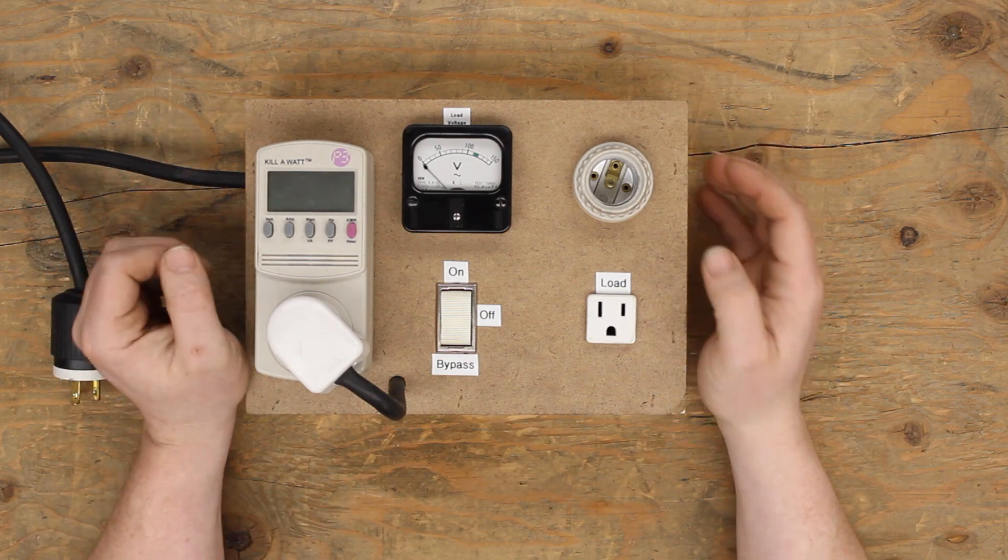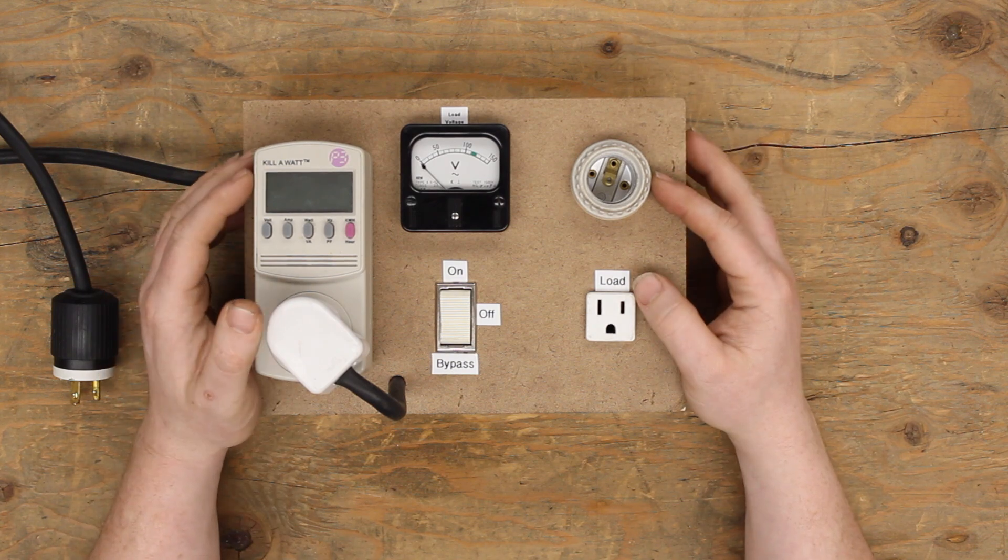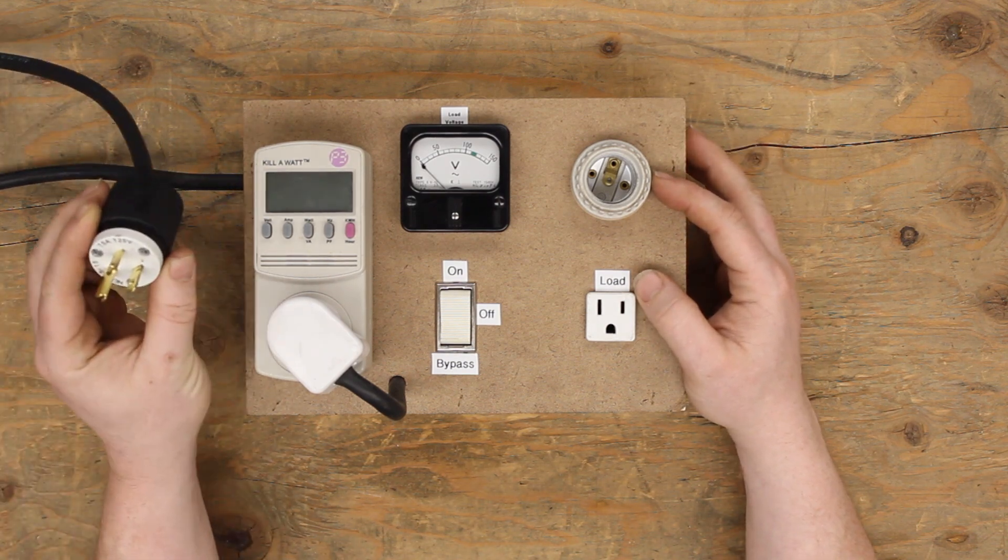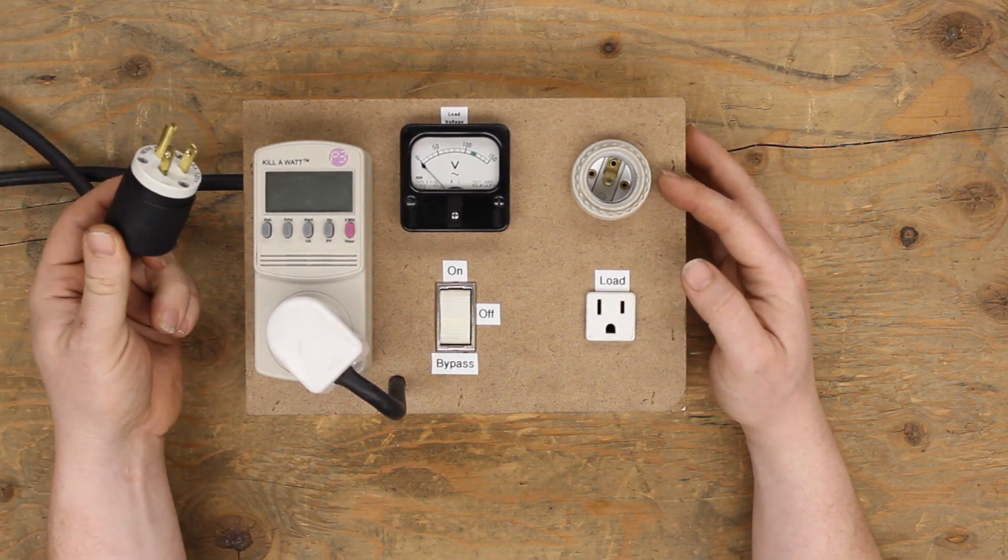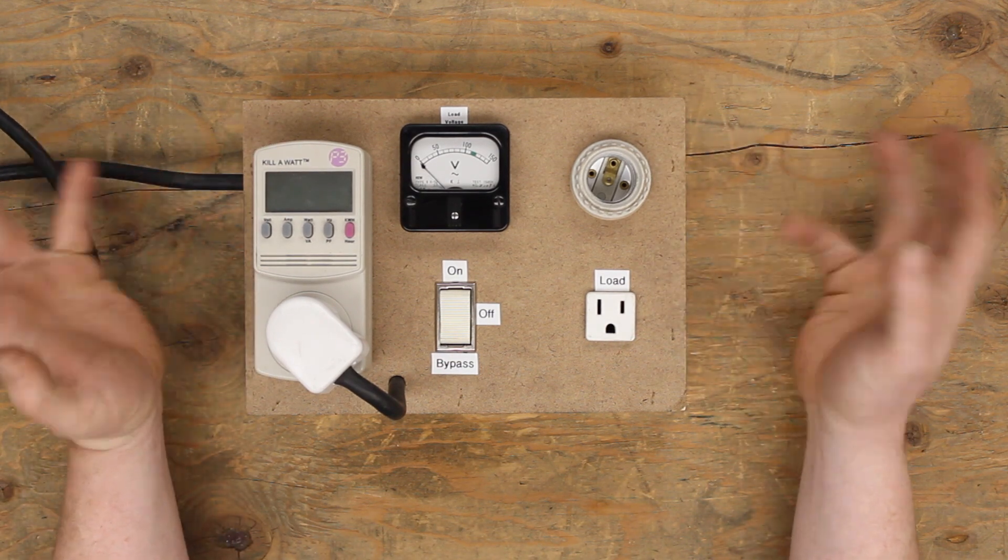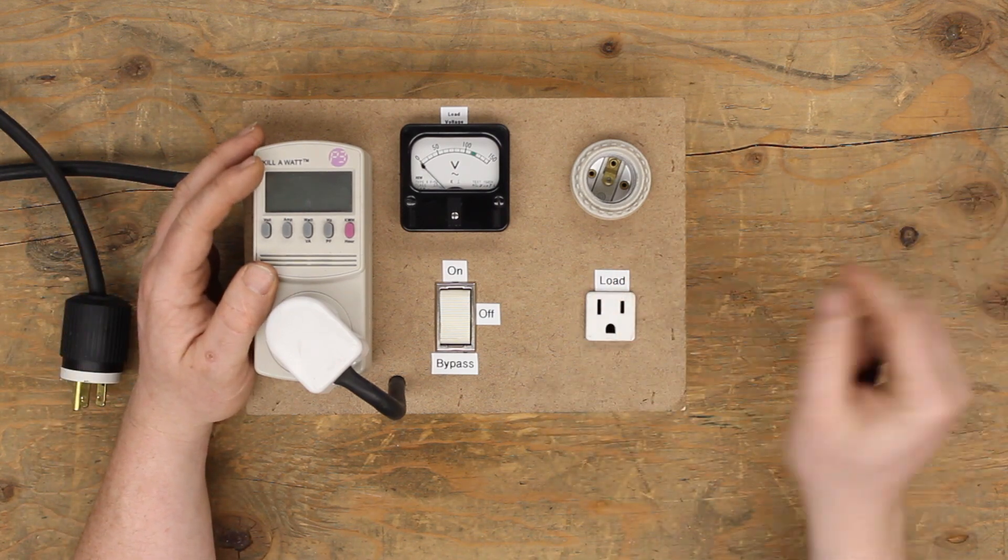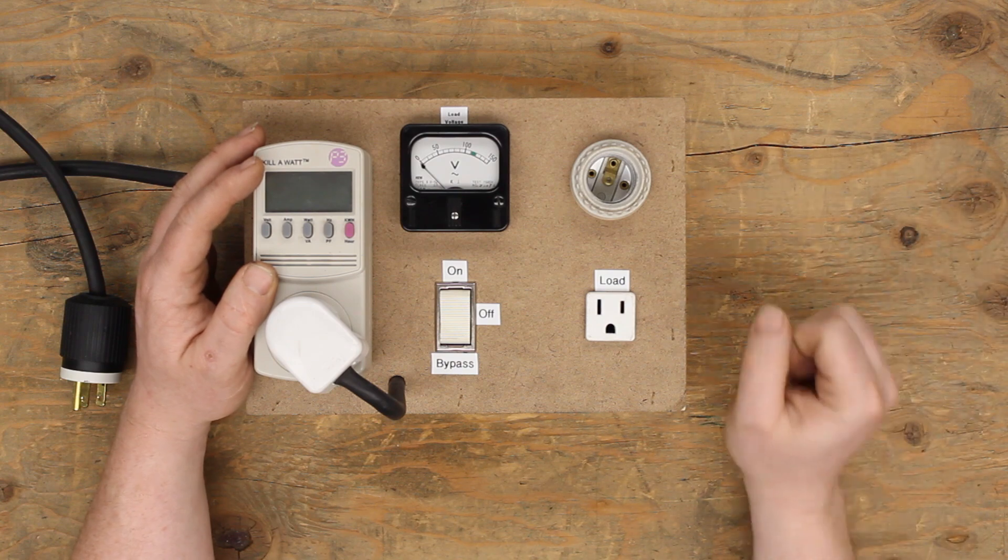What about if I want to use a variac on this, whatever I'm working on? Well, I don't use this. If I want to have a variac on the line side, I just simply have it before this plug here. And if I want it on the load side, for whatever reason, I can have it just basically the variac plugs into this, and whatever my load is, plugs into the variac.